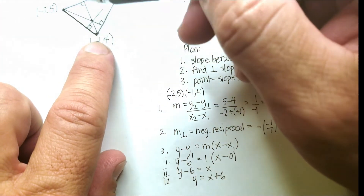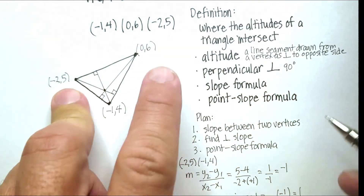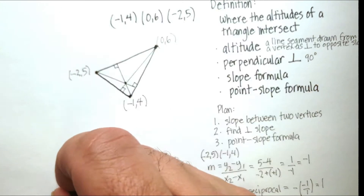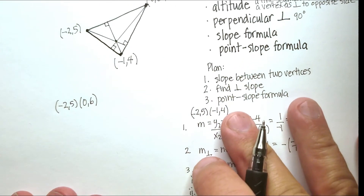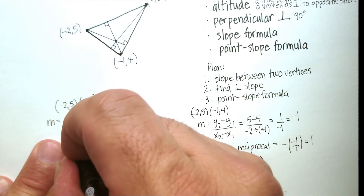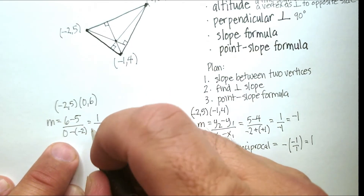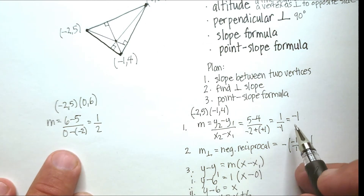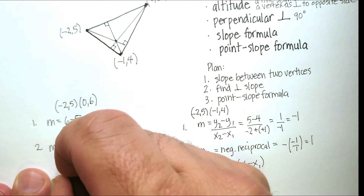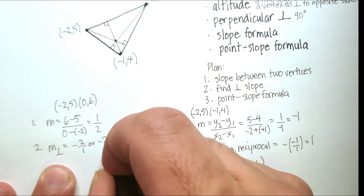Now let's find the equation of another altitude line using vertices (-2, 5) and (0, 6). The slope is m = (6 − 5)/(0 − (−2)) = 1/2. The perpendicular slope (negative reciprocal) is −2.